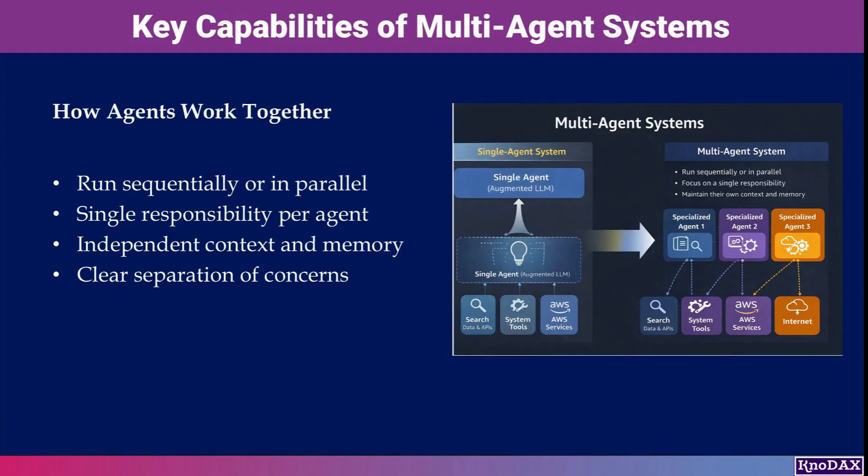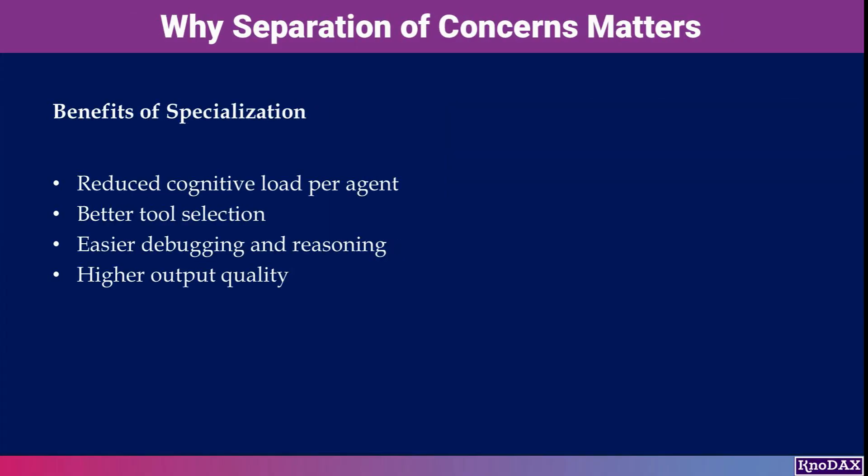Each agent has its own context and memory and is responsible for a single concern. This separation keeps each agent focused and effective. This separation of concerns is powerful — each agent can concentrate on what it does best without being overwhelmed by the entire system's complexity.